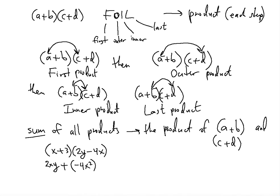Then the inner product. The inner product will be the closest two terms, which is 3 and 2y. They multiply each other to give us 6y.